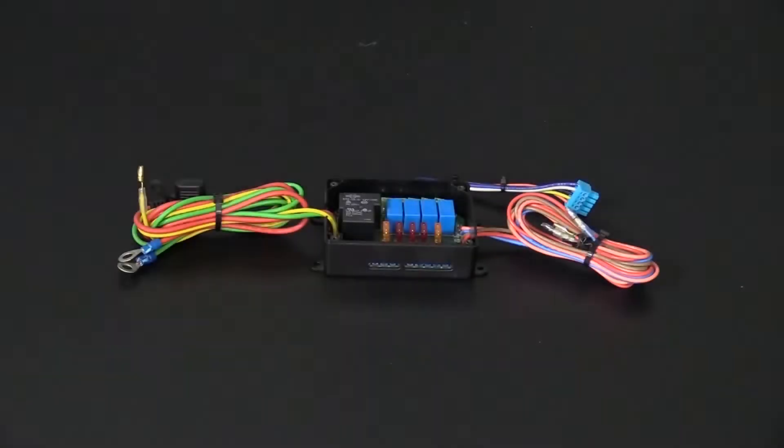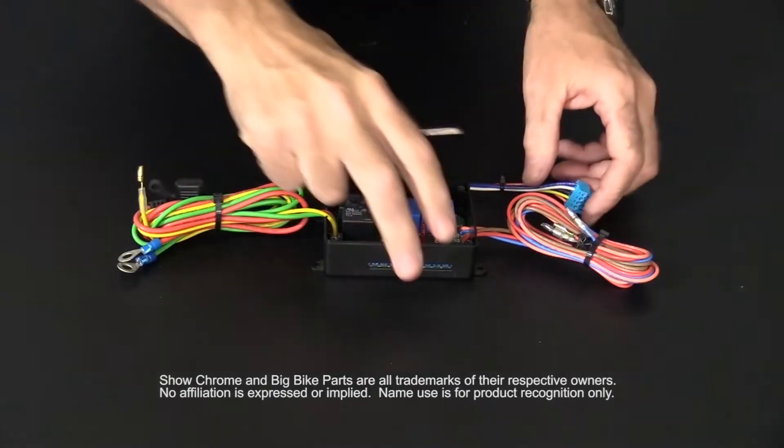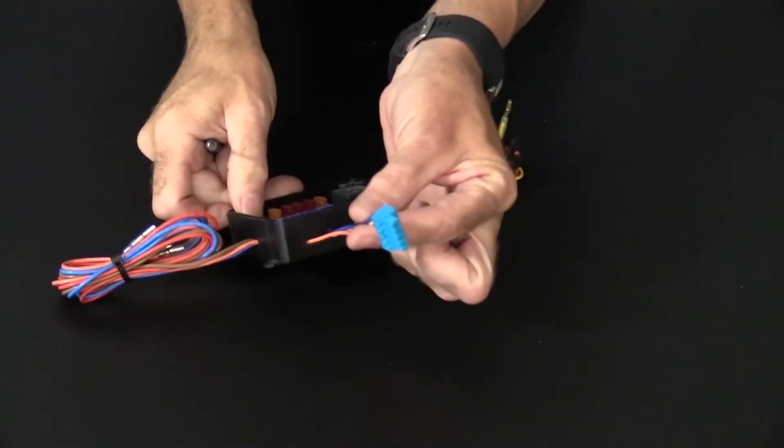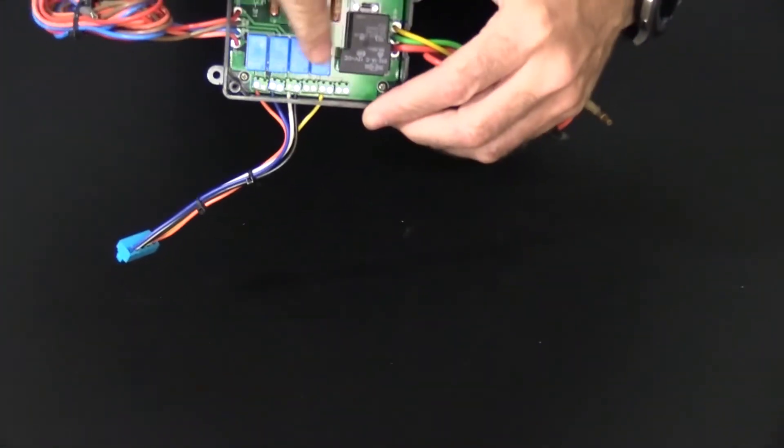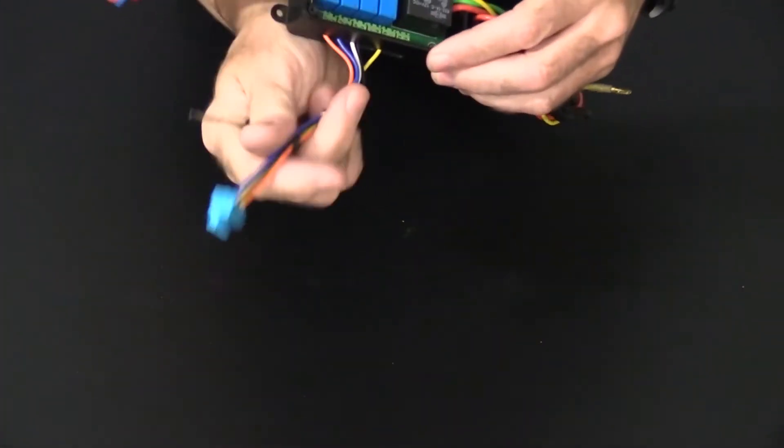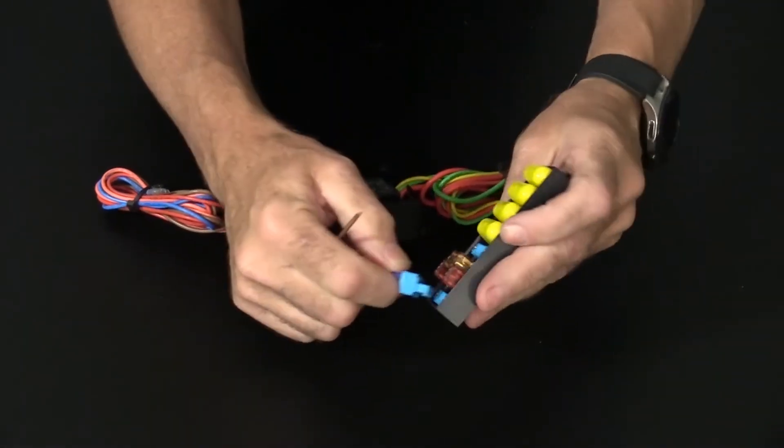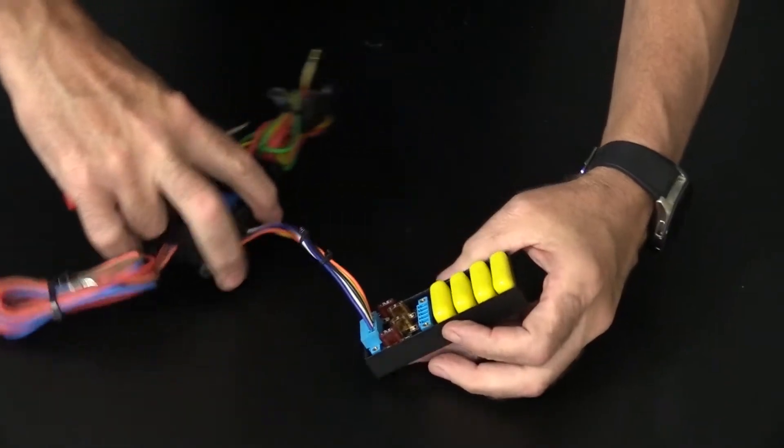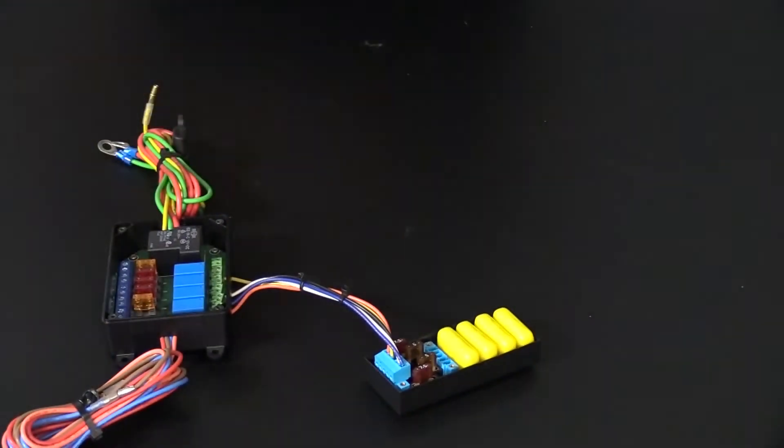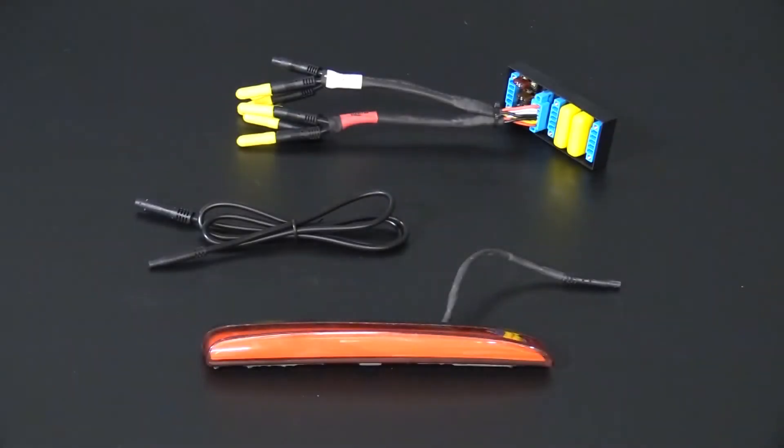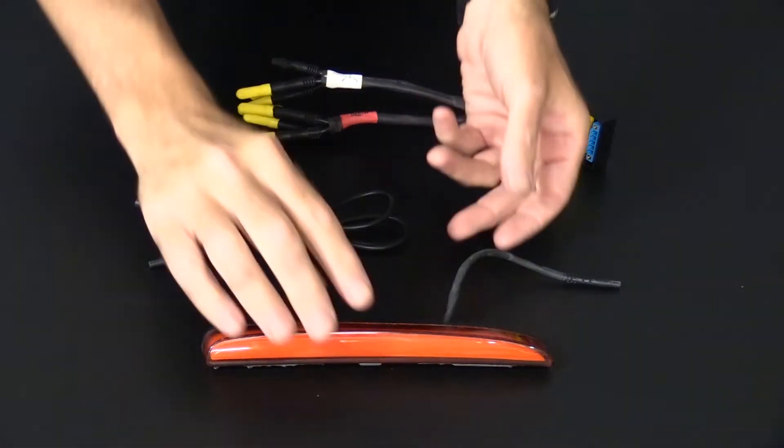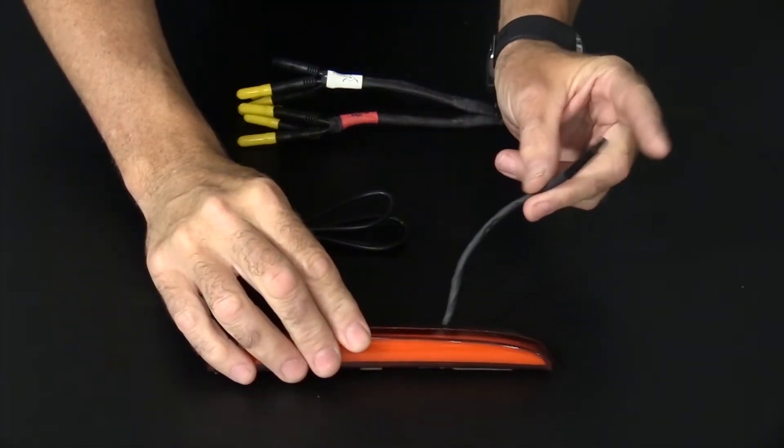If you currently own a Show Chrome isolator, we offer a harness to connect to our distribution block. Simply connect the wires from the connector to your isolator per the instructions, then insert the connector into the distribution block and tighten the screws. All Electrical Connection lighting products have a connector at the light that allows for easy panel removal and service.